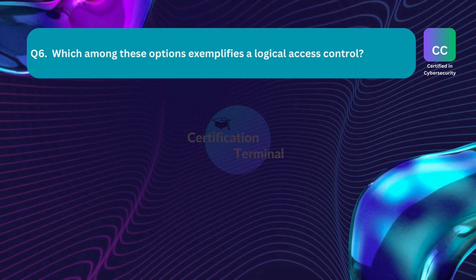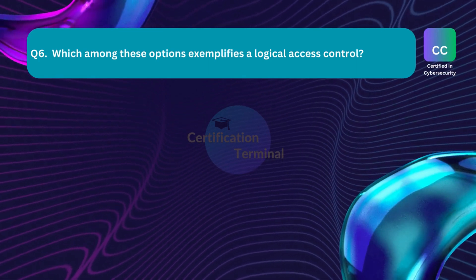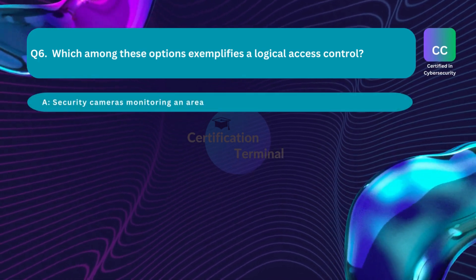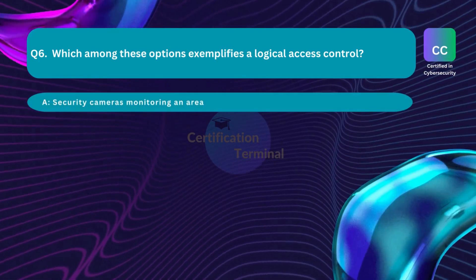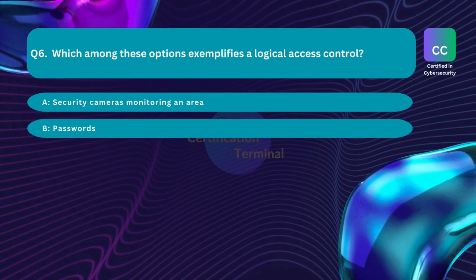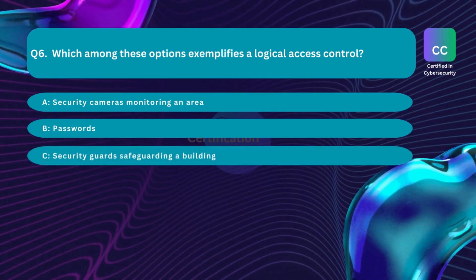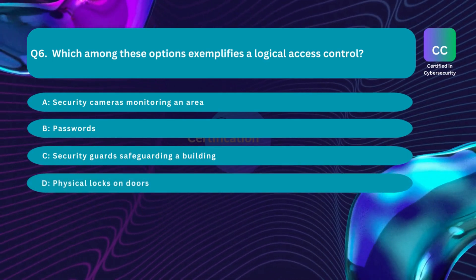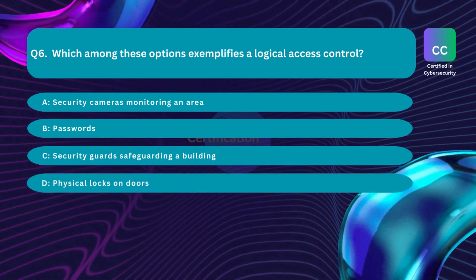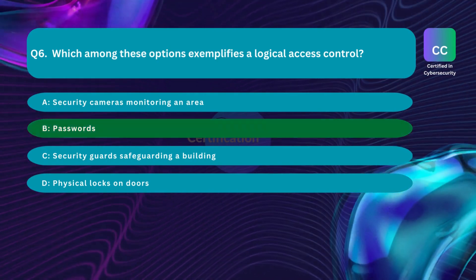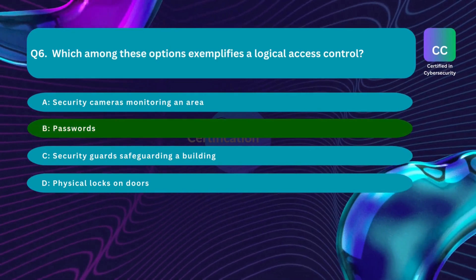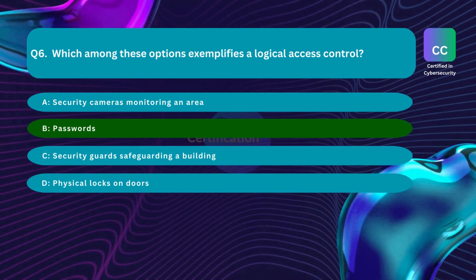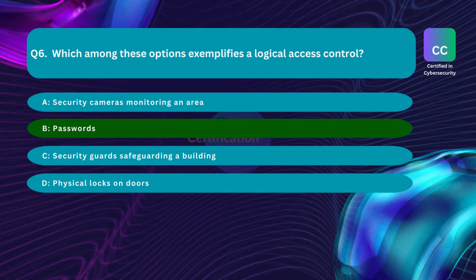Question number six: Which among these options exemplifies a logical access control? Option A: security cameras monitoring an area. Option B: passwords. Option C: security guards safeguarding a building. Option D: physical locks on doors. The correct answer is Option B — passwords.